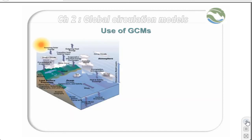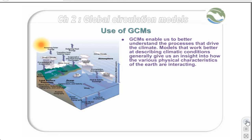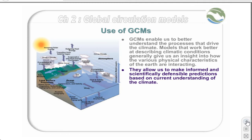The diagram on the left shows the incredible complexity of atmospheric processes, and it is these processes that GCMs attempt to model. GCMs enable us to better understand the processes that drive the climate. Models that work better at describing climatic conditions generally give us an insight into how the various physical characteristics of the Earth are interacting. They also allow us to make informed and scientifically defensible predictions based on current understanding of the climate.